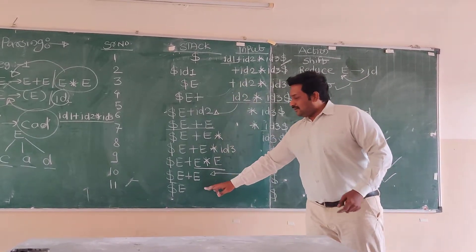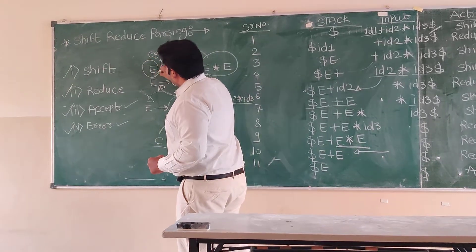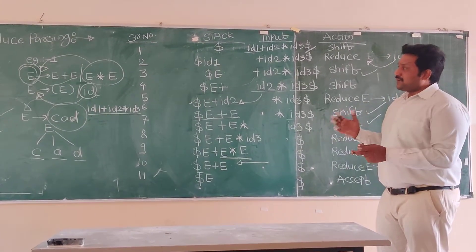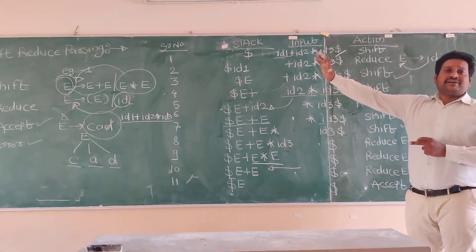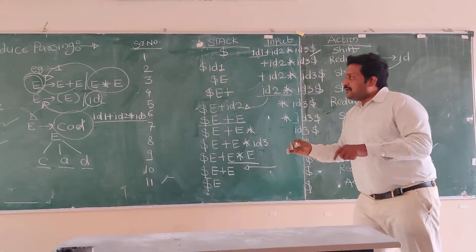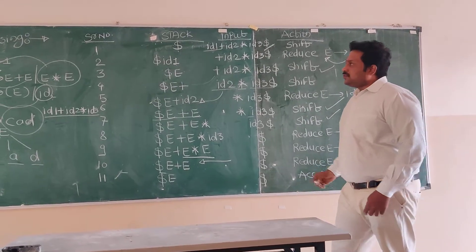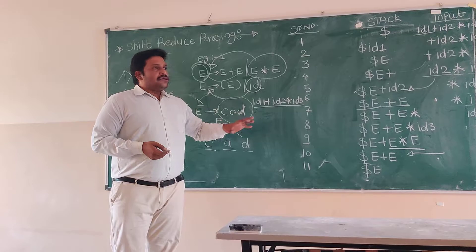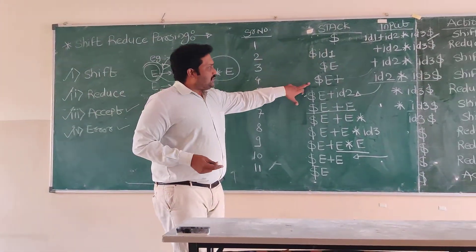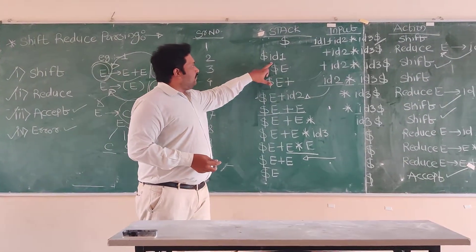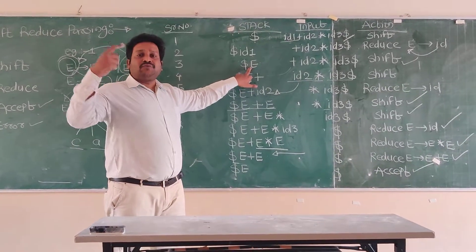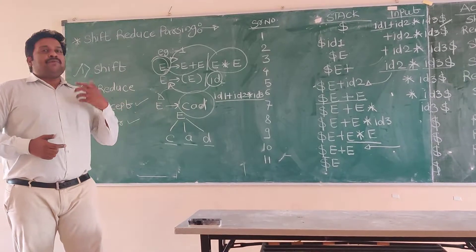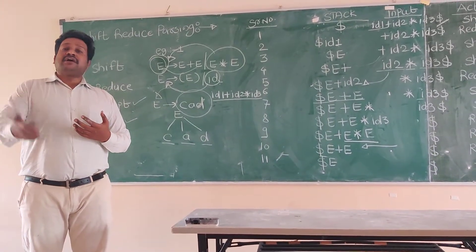Since the stack contains dollar E, which is our starting/root node, and the input contains only dollar, we declare accept. So these are the things related to the shift-reduce parser. However, there are conflicts available in the shift-reduce parser — whether to shift or whether to reduce. For example, when id1 is reduced to E, do we reduce it or go for the next input symbol? These conflicts can be overcome by LR parsing techniques, which we will discuss in the upcoming lecture.